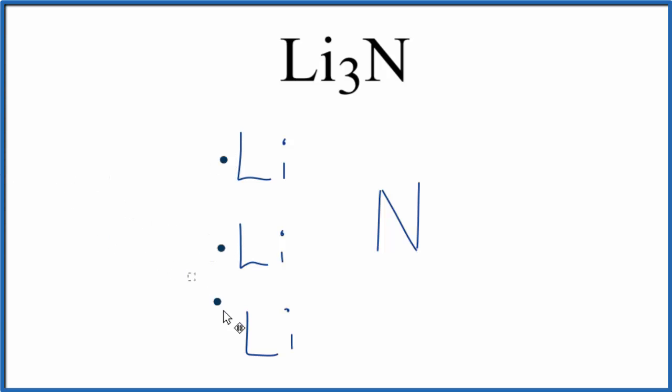And then nitrogen, that's in group 15, sometimes called 5A. That has five valence electrons. So nitrogen has its five valence electrons.